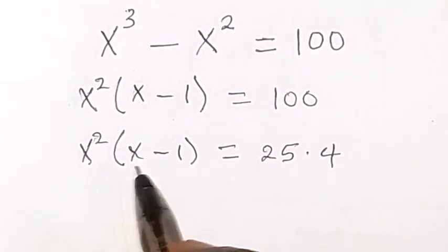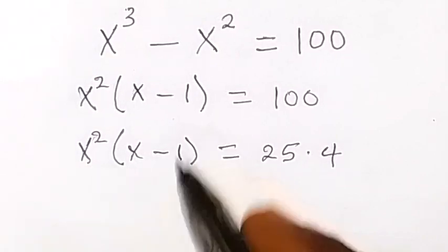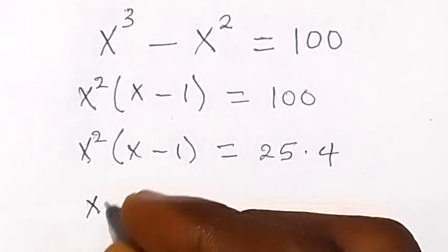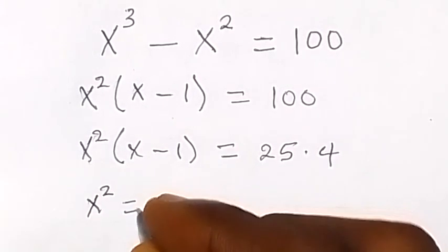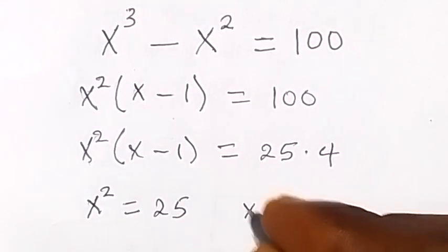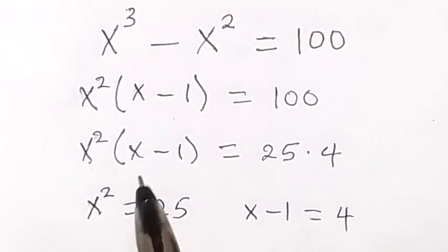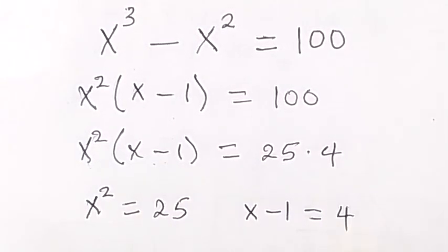Each of these multiply give us 25 times 4. Let's say the first one here which is x squared is 25, and the second number which is x minus 1 equals to 4. So let's equate this to 25 and x minus 1 to 4.